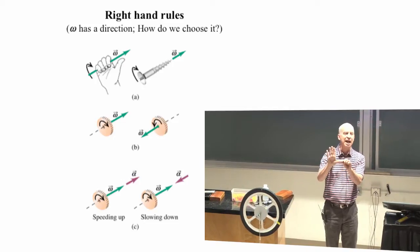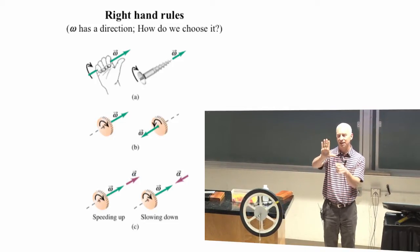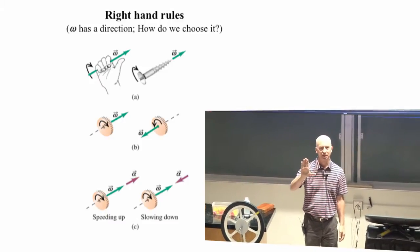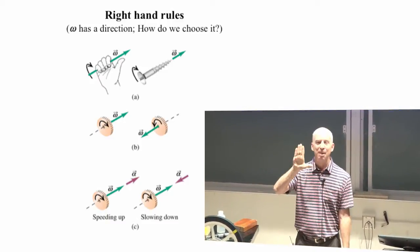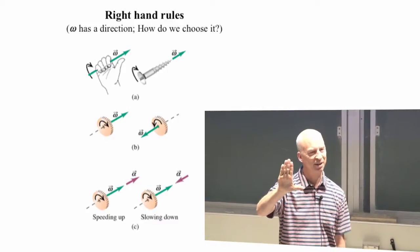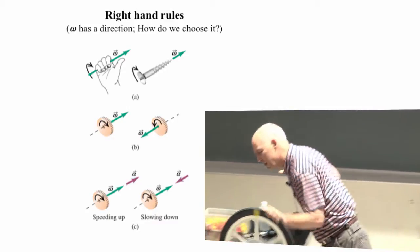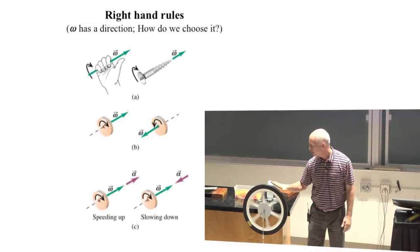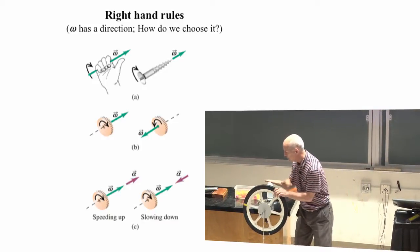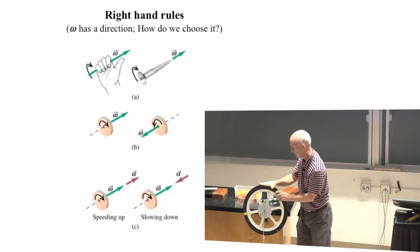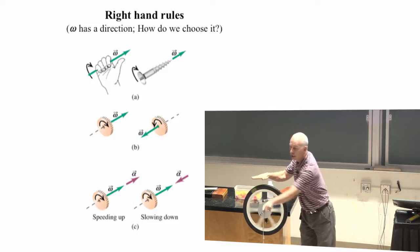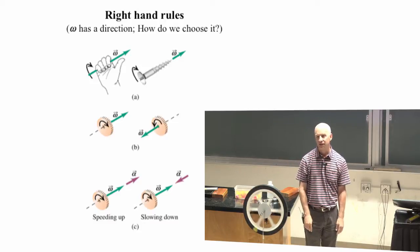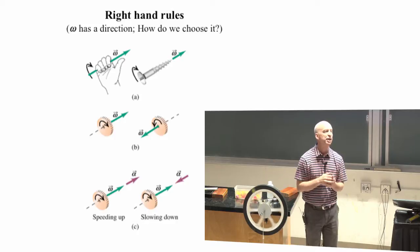So here's your first right hand rule. Your right hand has fingers and a thumb that are perpendicular to each other. They don't have to be. They could be like this. But make them perpendicular to each other. And the direction of this thing, when your fingers are circling around the direction that this thing is actually going, then your thumb is pointing out toward you. That's the direction that the angular velocity vector, that's the direction we choose.